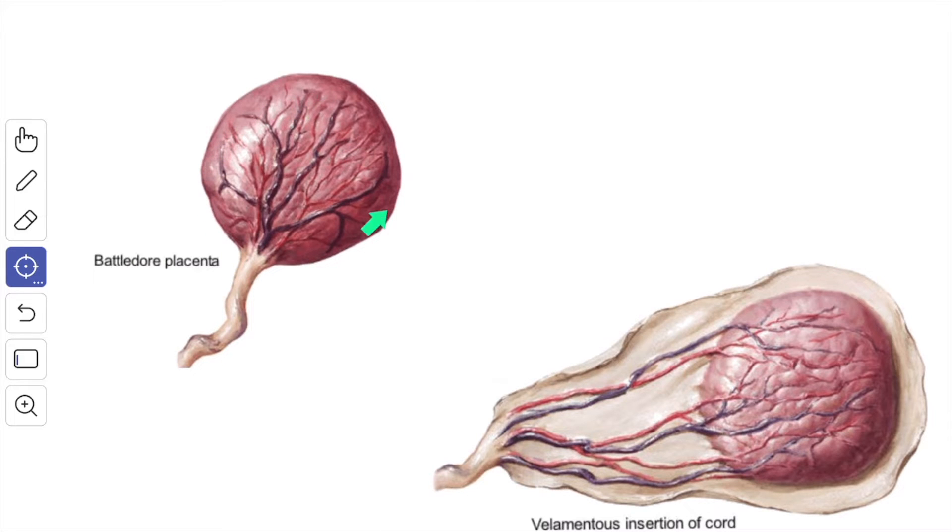Then the velamentous placenta when the cord failed to reach the placenta and it is attached to the fetal membrane close to the periphery of the organ.